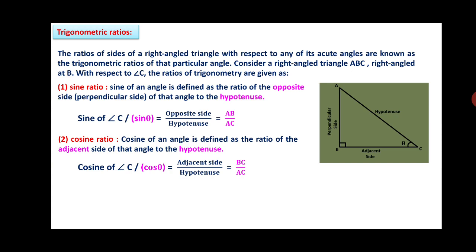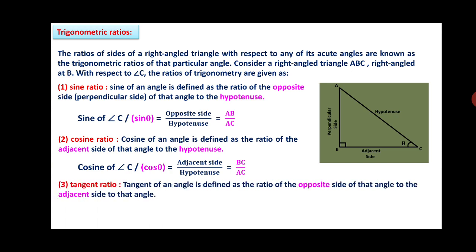Therefore, cos of angle C, considered as cos θ, is equal to adjacent side upon hypotenuse, that is BC upon AC. Tangent of an angle is defined as the ratio of the opposite side to the adjacent side. Therefore, tan θ is equal to opposite side upon adjacent side, which is AB upon BC. These are the three basic ratios you have already learned in the previous standard.